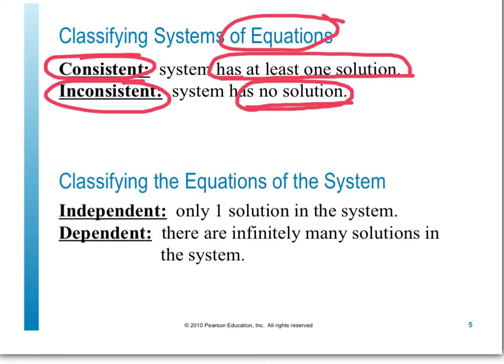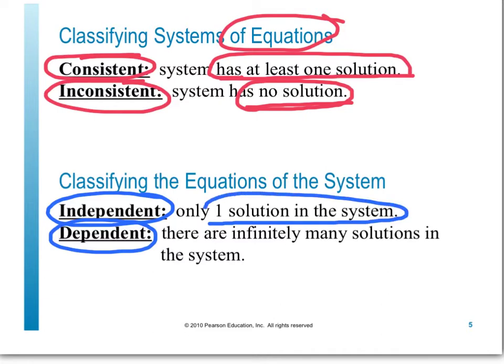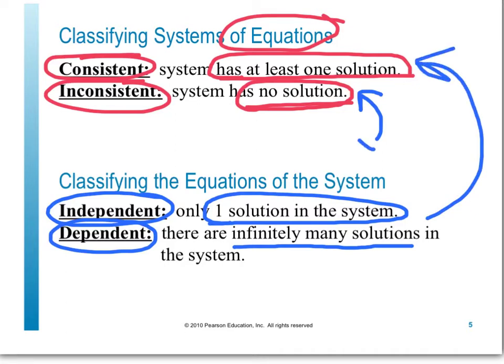When we classify the specific equations in a system, we use the words independent and dependent. An independent system has exactly one solution. A dependent system has infinitely many solutions. Note that when we have an inconsistent system — no solution — we don't use the words independent or dependent. Those terms only apply to equations in consistent systems.